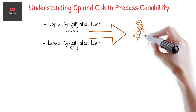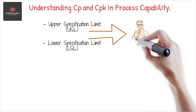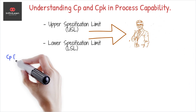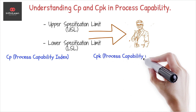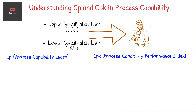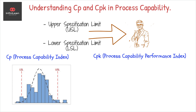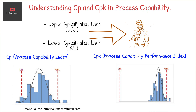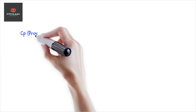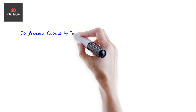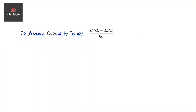When assessing process capability, we rely on two key indices: CP and CPK. CP, or Process Capability Index, examines the process's potential by measuring the width of the process spread against the width of the specification limits. If CP is greater than 1, your process has the potential to meet specifications.